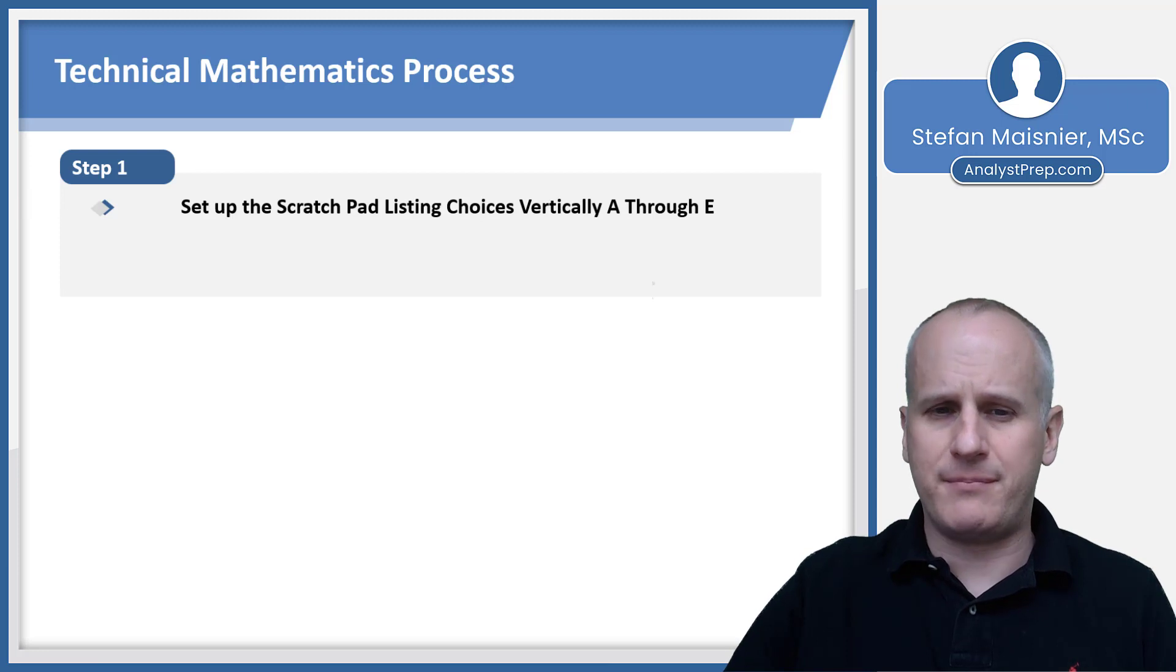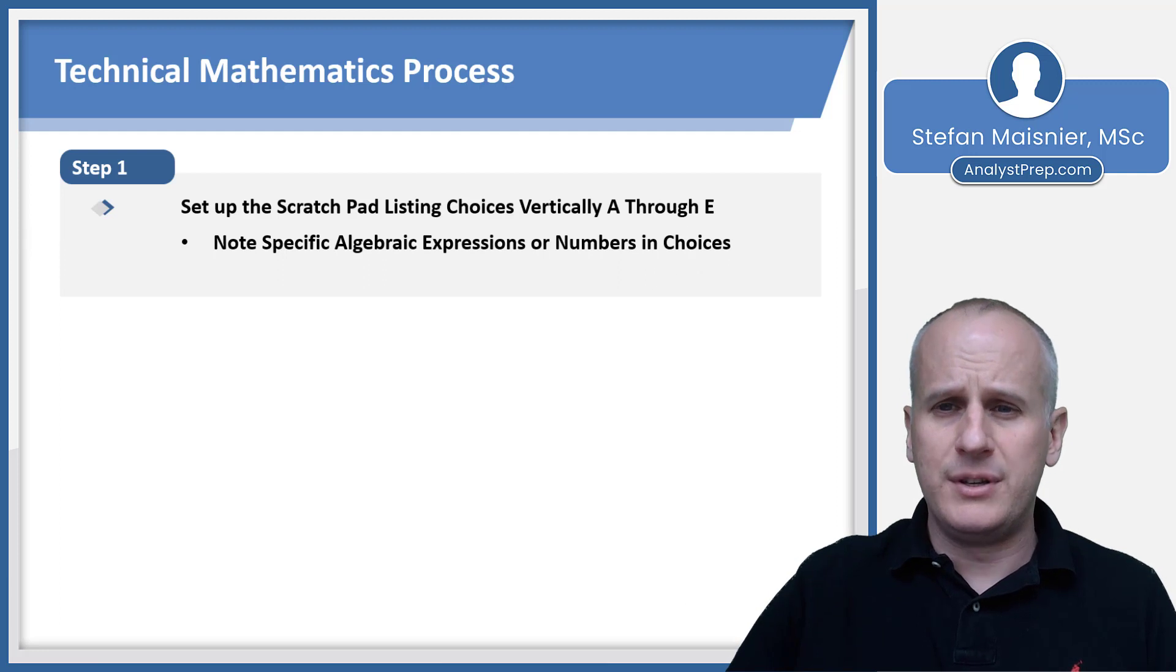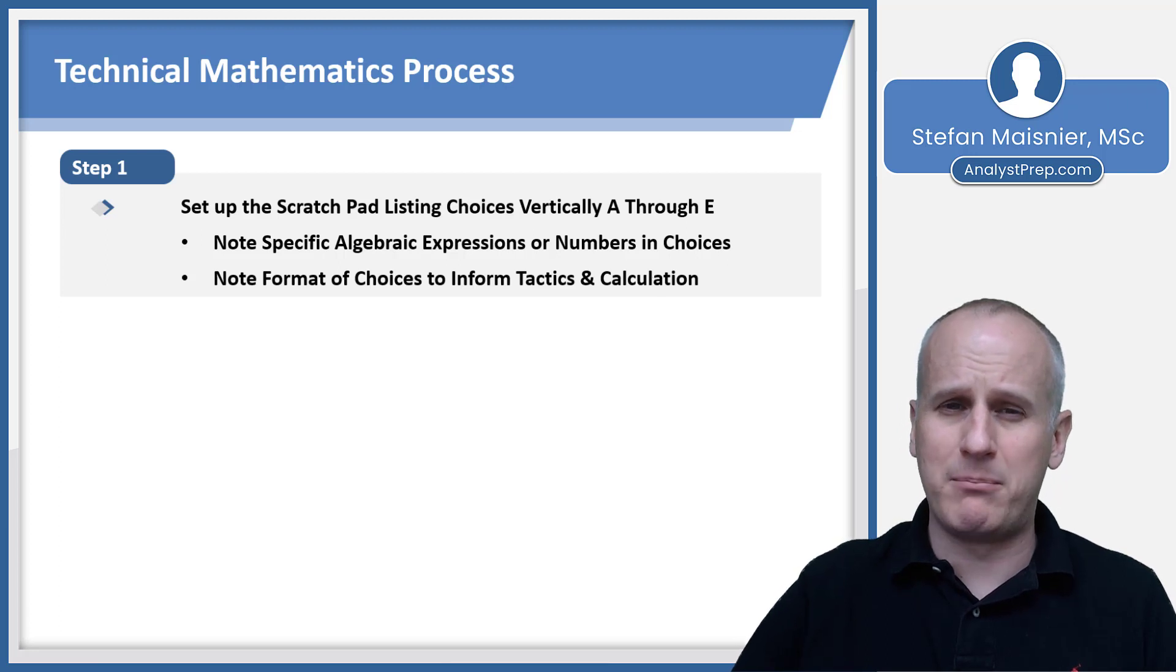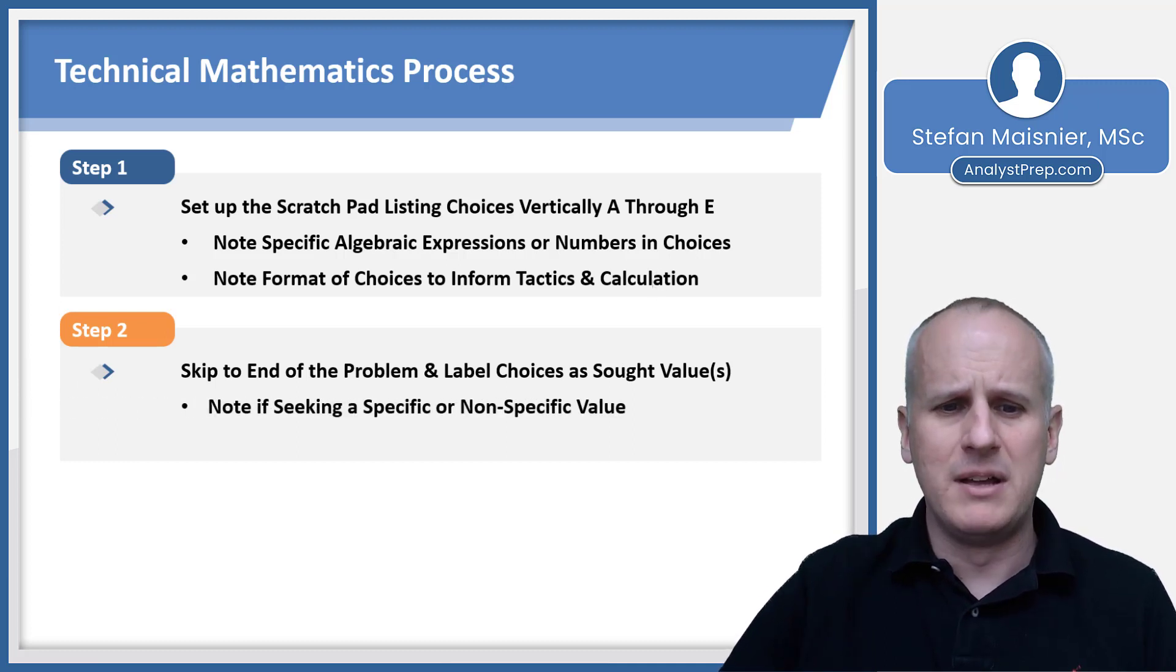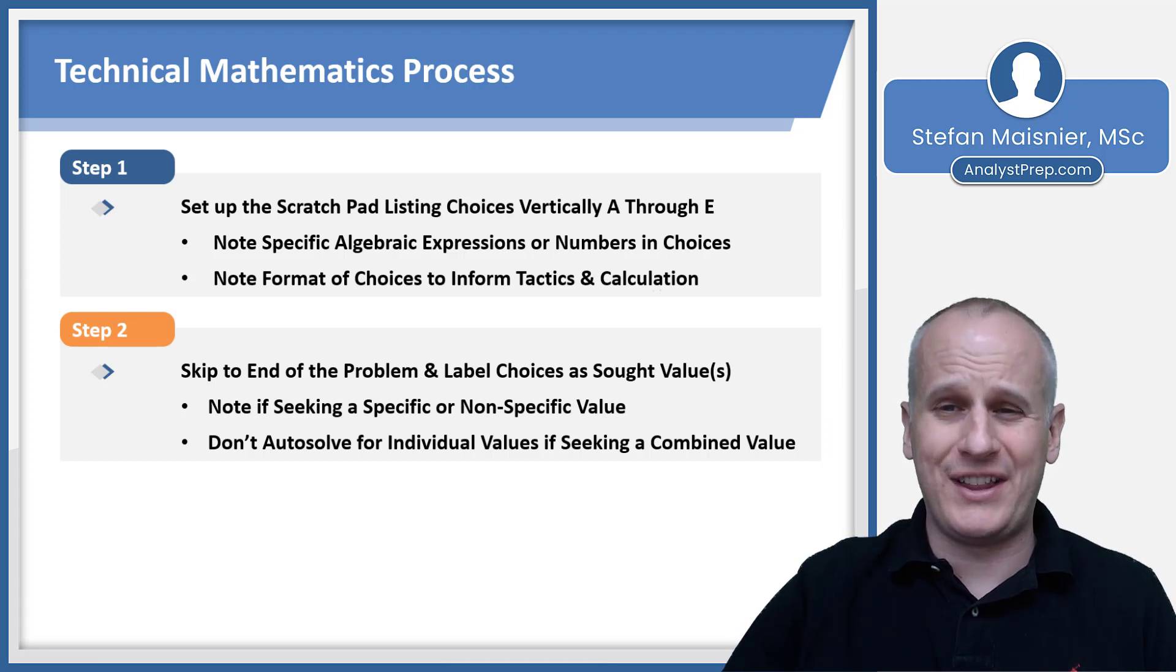Our technical mathematics process: as always, set up the scratch pad listing your choices vertically A through E. You can include simple numbers if they're there, but you're going to want to note the specific algebraic expressions or numbers that are in the choices, and note the format of those choices to inform your tactics and calculation. Remember that the key with the technical approach is that it needs to be both apparent and simple to you in the moment in order to reasonably execute it. Then you want to skip to the end of the problem, label the choices at the sought value. This is the part that we do every time. You want to note if you're seeking a specific or nonspecific value, and beware of auto solving for individual values if they're seeking a combined value. You just saw in the last problem, we did not care what A was, we did not care what B was, we didn't even care what M and N were in a non-variable sense. Make sure that you're solving for what they're asking for directly.